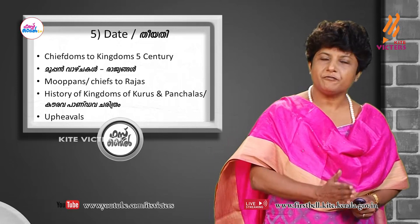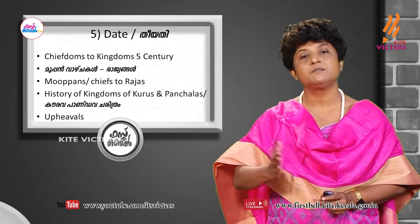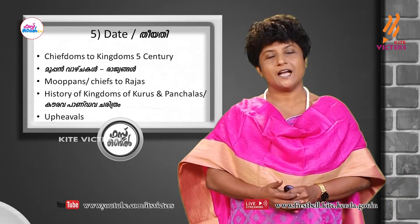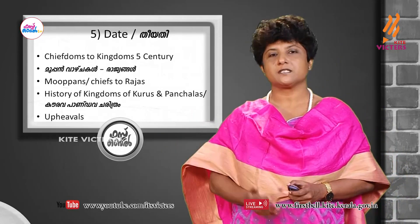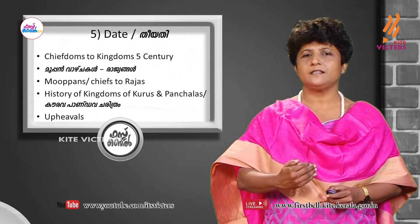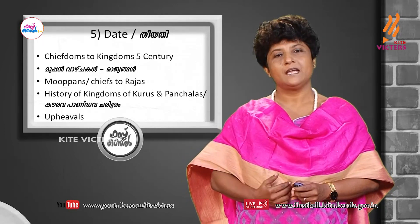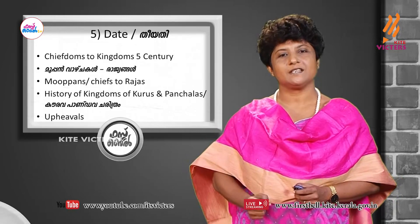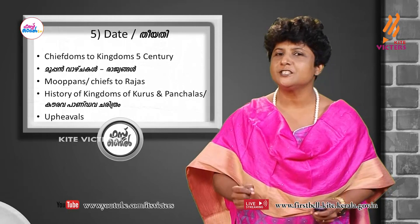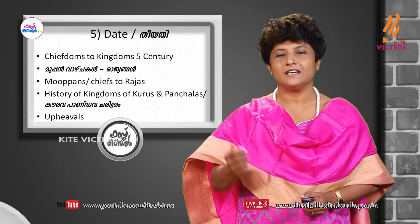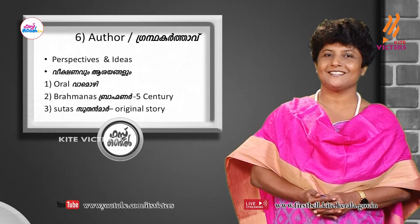The fifth element is date. The shift from the rule of chiefs to the rule of kings — the transition from chiefdom to kingdoms — happened in the 5th century. History of kingdoms of the Kurus and Panchalas should be written, and their achievements should be recorded. They had that feeling.